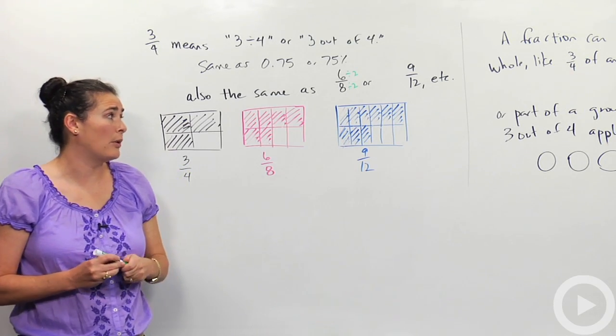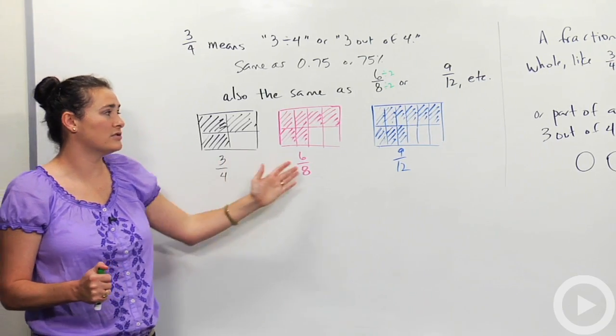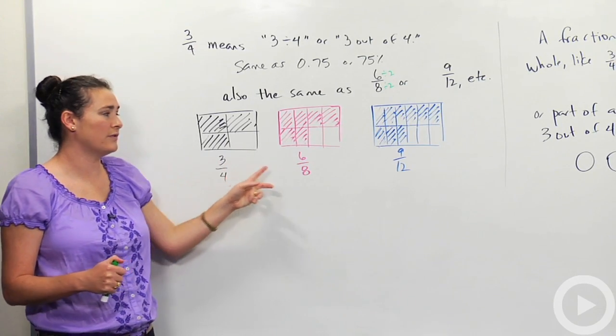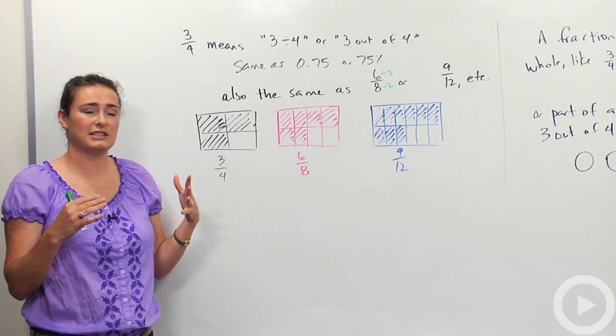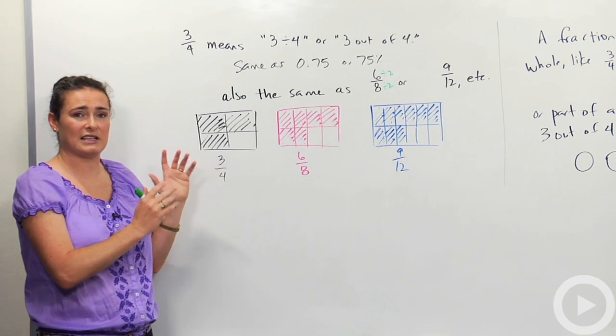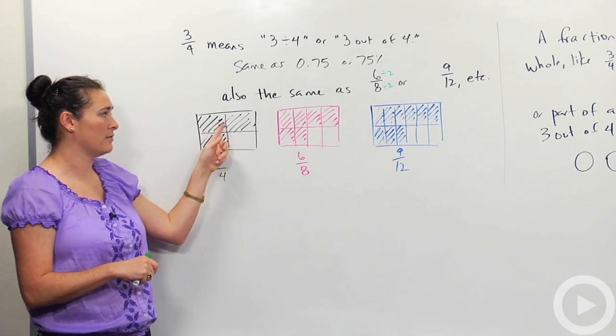Let's talk a little bit about what a picture of this might look like. I've drawn on the board those 3 different fractions we talked about, 3 fourths, 6 eighths, and 9 twelfths. For 3 fourths, what I did is I tried to draw 4 equal sized pieces, and then I shaded 3 of them. 1, 2, 3.